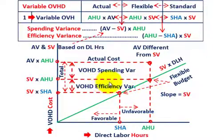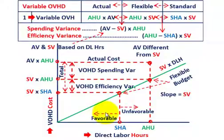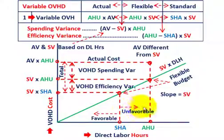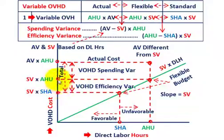Based on our standard hours allowed, if the actual hours used were less than the standard hours allowed, we would have a favorable variance, because our variable overhead cost would have been less. Anything on the other side — where actual hours used are greater than standard hours allowed — is unfavorable. In this case, actual hours used were greater than standard hours allowed, so it's unfavorable, meaning variable overhead cost was greater based on actual hours used.